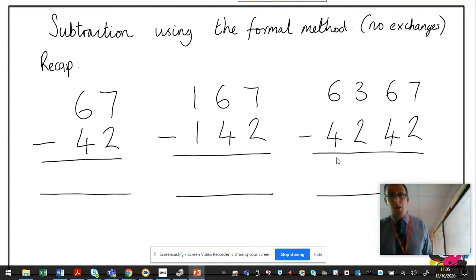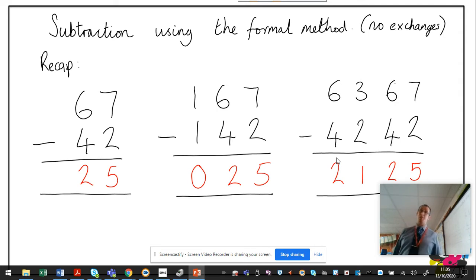Okay, so let's go through the answers. There's no exchanges necessary here, so it's just straightforward number bonds. Let's have a look. 67 take 42 is 25. 167 take 142 is 25. Obviously, we've got a placeholder in the hundreds. It doesn't affect the digits. It would do if there was another column. So 6,367 take 4,242 is 2,125.